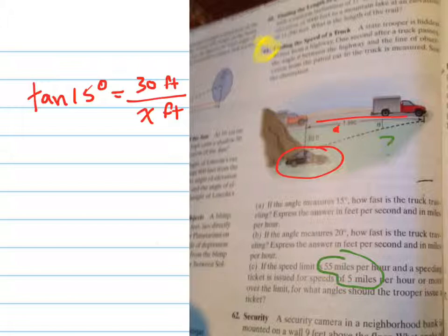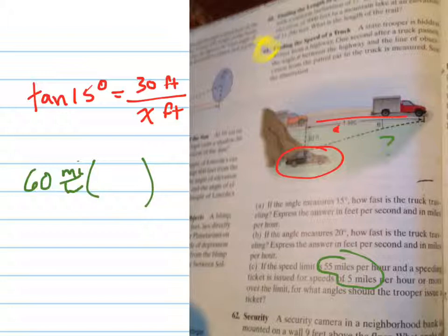And the speed is going to be 60 miles per hour. So what I need to do is convert how many feet can you go in a second if the speed limit is 60 miles per hour. So let's do that conversion again. 60 miles per hour, and I'm going to convert that to feet per second.